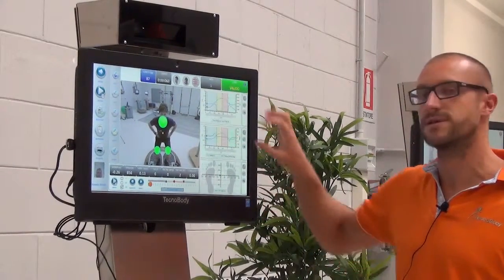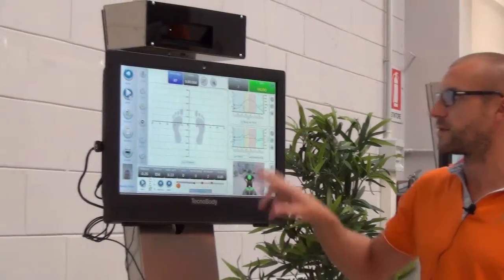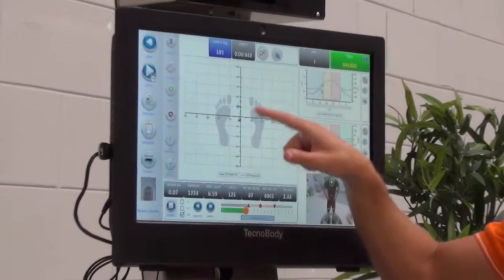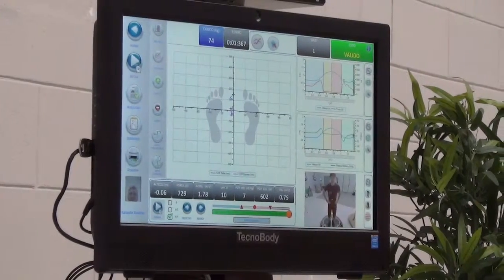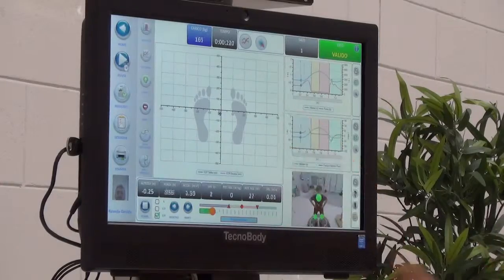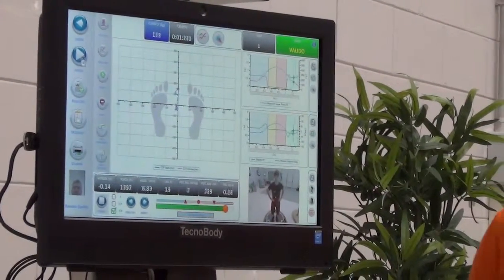You see here on the right you can select different kinds of graphics that you can select and analyze more in particular. What about for example this graphic? It's the sway of the body weight, so the center of gravity, the center of pressure on the platform.